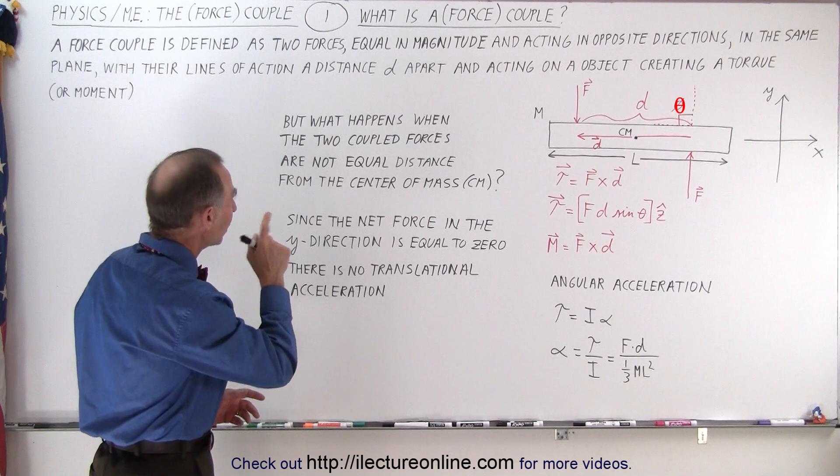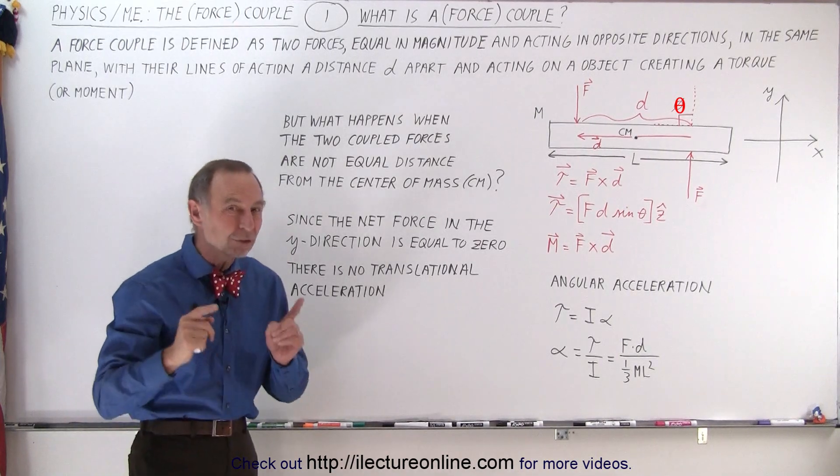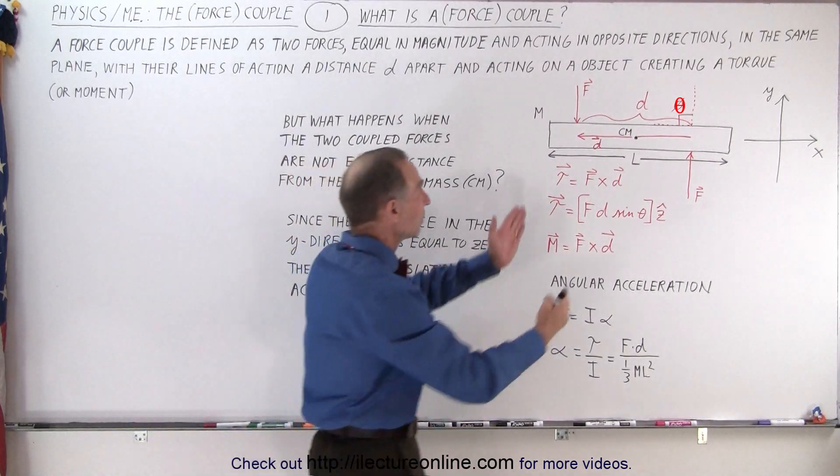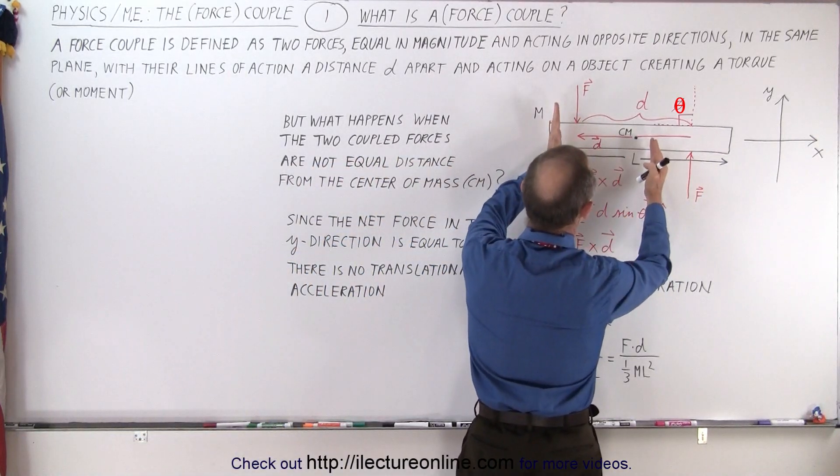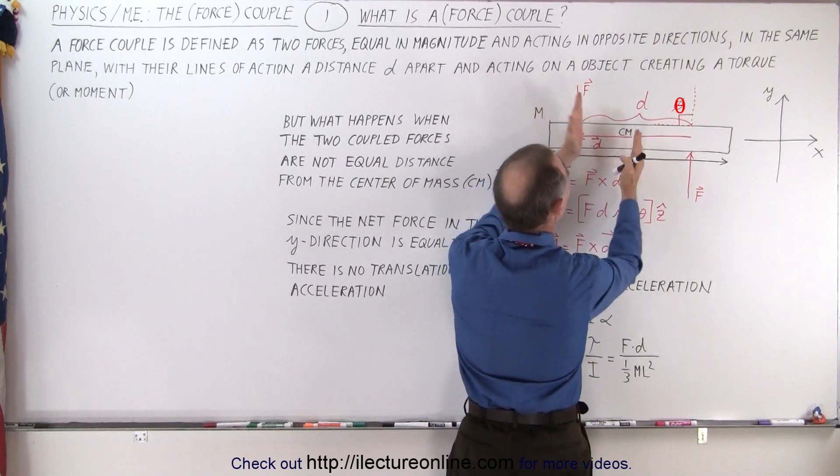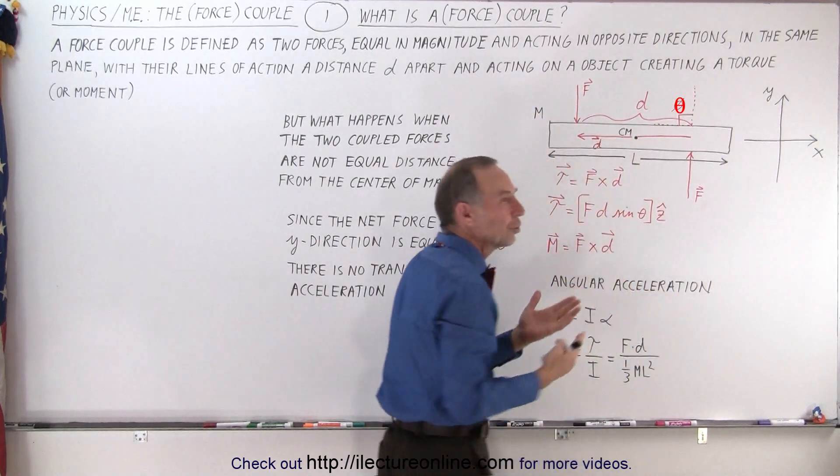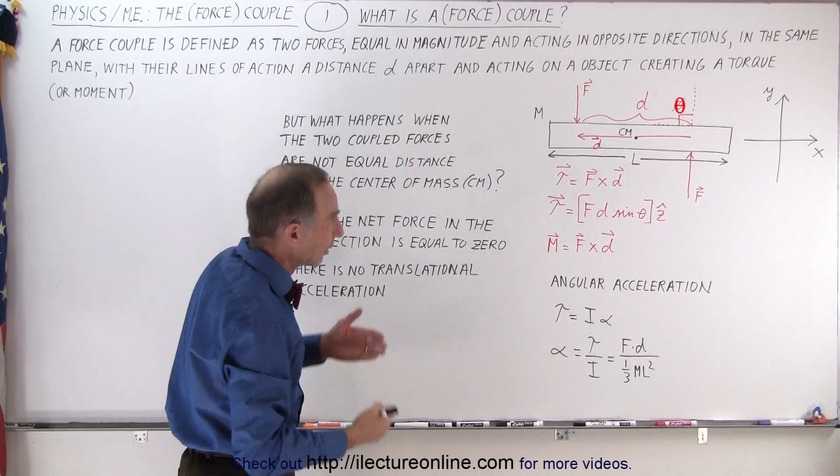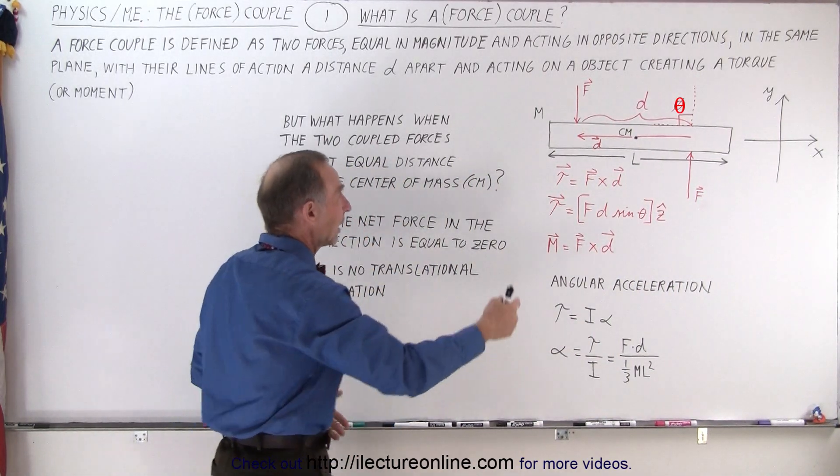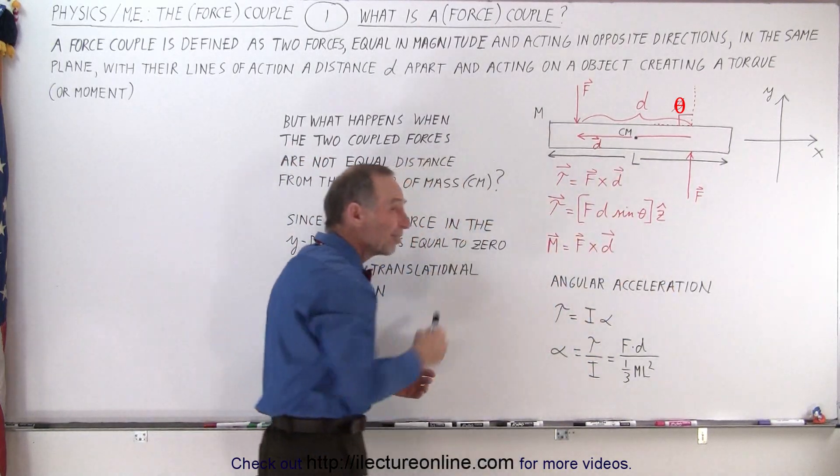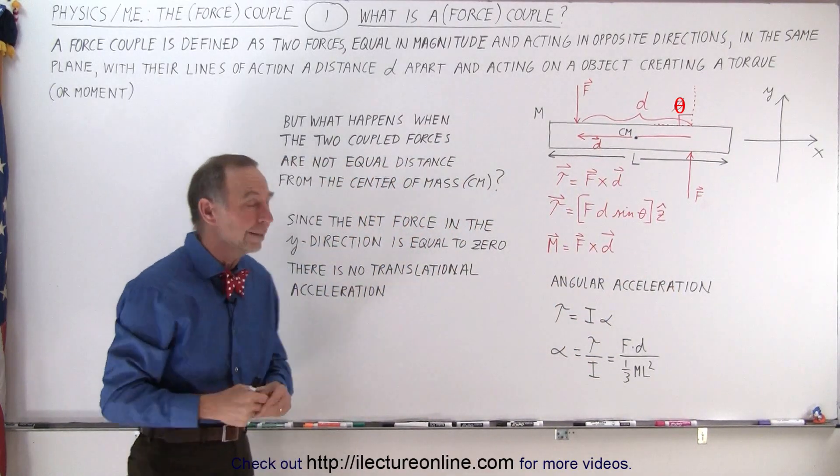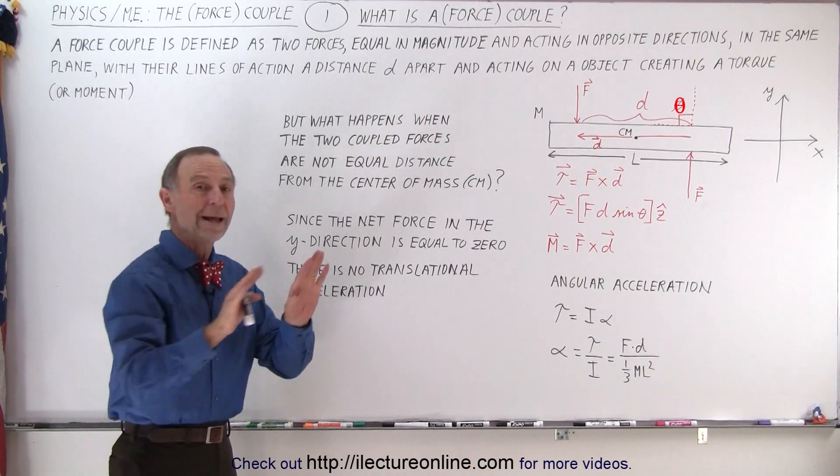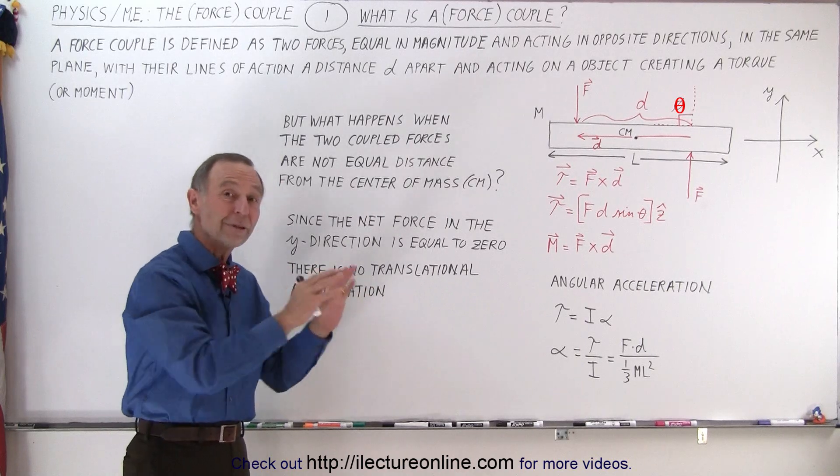Now, what happens when the two coupled forces are not equal distance away from the center mass? And that was essentially what the question was from the viewer. What if they're not centered? What if they're offset, maybe they're both on the same side from the center mass? What does that do? Does that create a linear acceleration? Does that create a torque in such a way that there's a rotation away from the center mass? What is really going on?